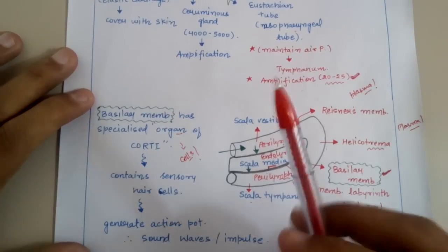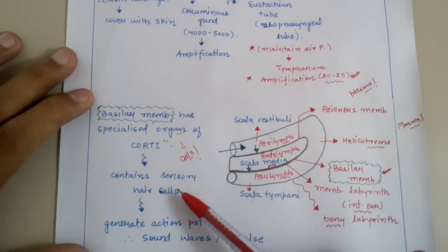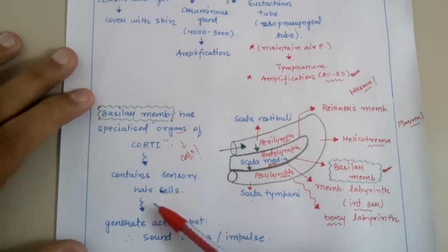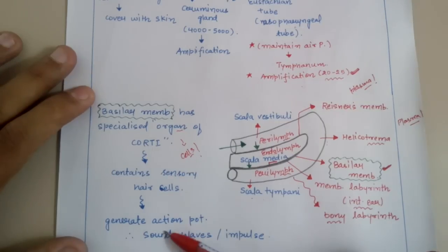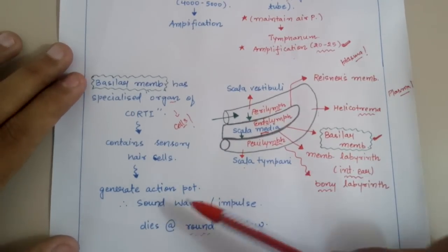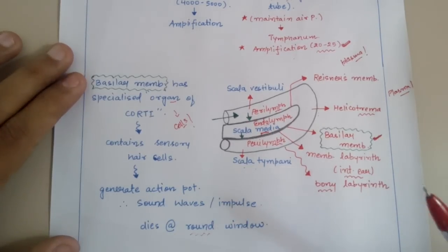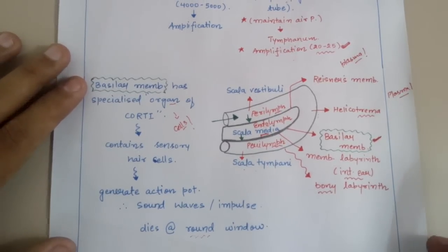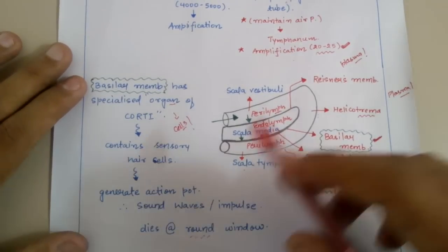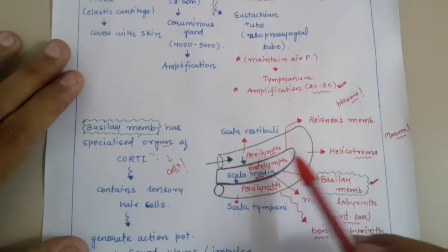The organ of Corti contains specialized sensory hair cells which generate action potential, and therefore produce sound waves or impulse. This is a very important feature of the basilar membrane.